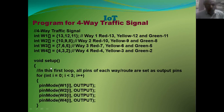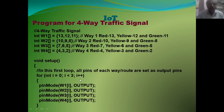In void setup, I have used two loops. In the first loop, all pins of each way or root are set as output pins using pinMode: w1[i] output, w2[i] output, w3[i] output, w4[i] output, where i varies from 0 to 2. So w1[0], w2[0], w3[0], w4[0] indicate red; index 1 indicates yellow; and index 2 indicates green. All LEDs are set as output using the pinMode command.